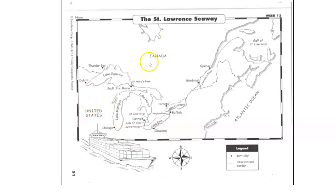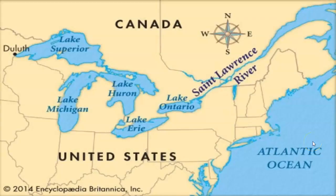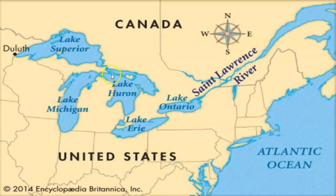Canada is to the north of this Seaway. The United States is to the south of this Seaway. Here's a color image of what it looks like coming from the Atlantic Ocean into the Gulf of St. Lawrence and then into the St. Lawrence River. And you can see how this connects all these Great Lakes to each other. All these little connections here are canals that connect each Great Lake to the other so that you can get all the way over to Lake Superior and the very farthest west port called Duluth.